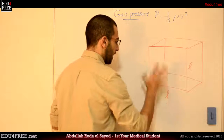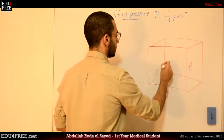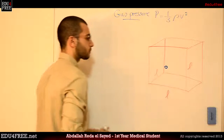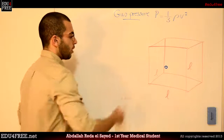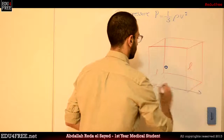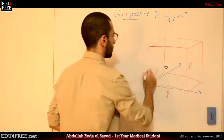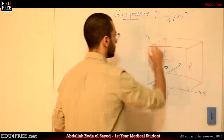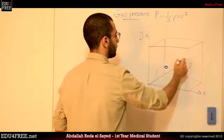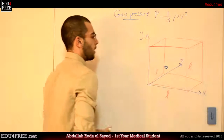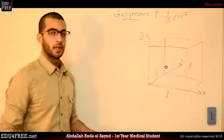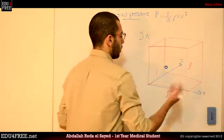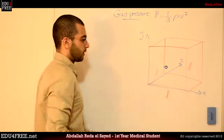We have a gas particle just over here. If we put the axes like that — this is the x-axis, this is the y-axis, and this is the z-axis. This particle is, of course, in random motion, and it's moving in all directions but in straight lines.